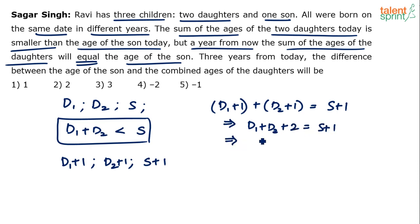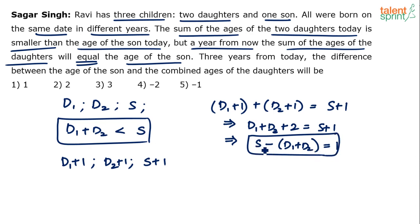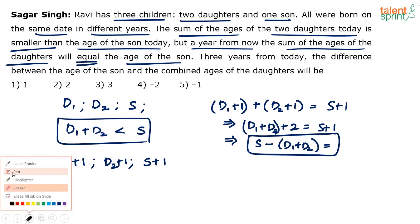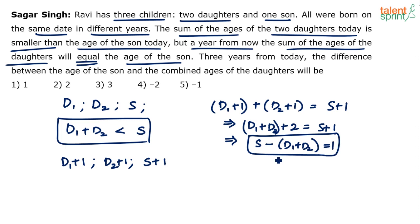From that equation we get S − (D1 + D2) = 1. Very important conclusion: the age of the son minus the sum of the ages of the daughters equals 1 year. So in the current state, the difference between the son's age and the sum of the daughters' ages is 1 year. Now the question asks: three years from today, what will that difference be?